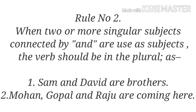Rule two: when two or more singular subjects connected by 'and' are used as subjects, the verb should be in the plural. For example, 'Sam and David are brothers.' Sam is a singular subject connected with another singular subject David with 'and', which requires a plural verb 'are'. Another example: 'Mohan, Gopal and Raju are coming here.' Mohan, Gopal and Raju are three singular subjects connected with 'and', so they take the plural verb 'are'.